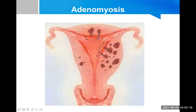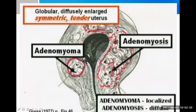Pictures show endometrial tissue — glands and stroma — present inside the muscle layer of the uterus (adenomyosis). In another picture, an adenomyoma shows symmetrical, globular uterine enlargement. On bimanual examination, the enlargement is felt and is usually tender.